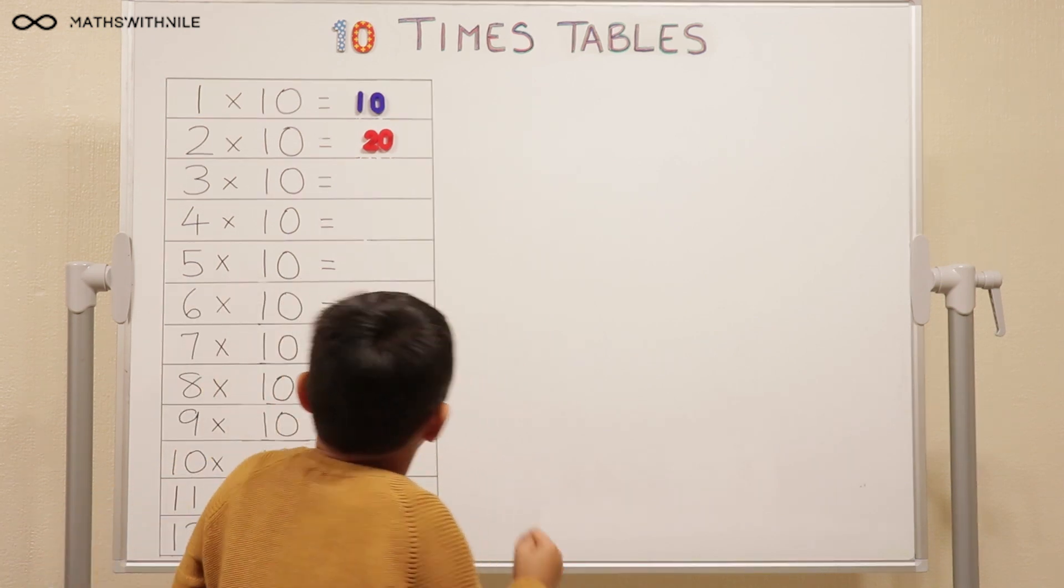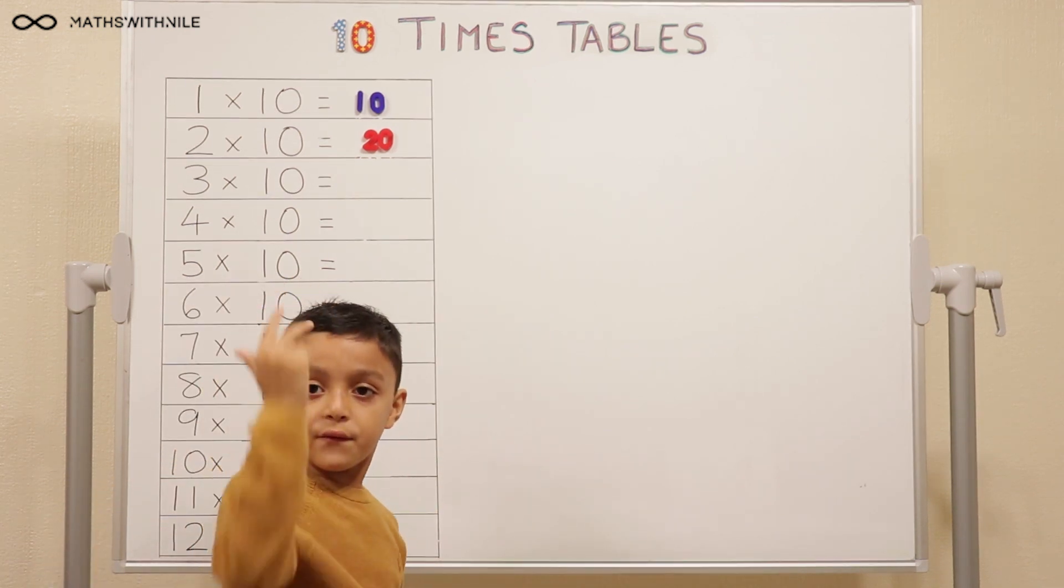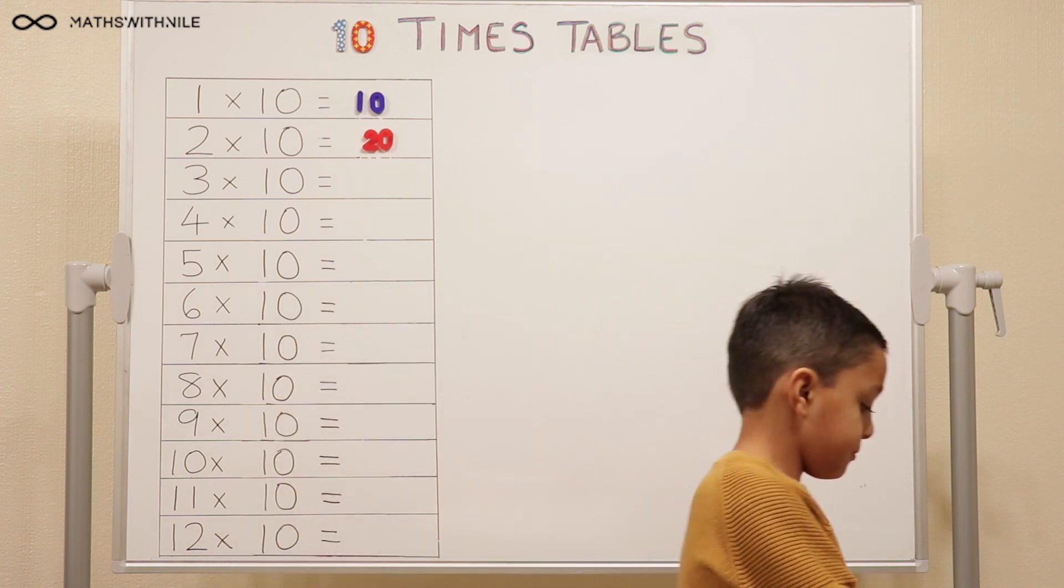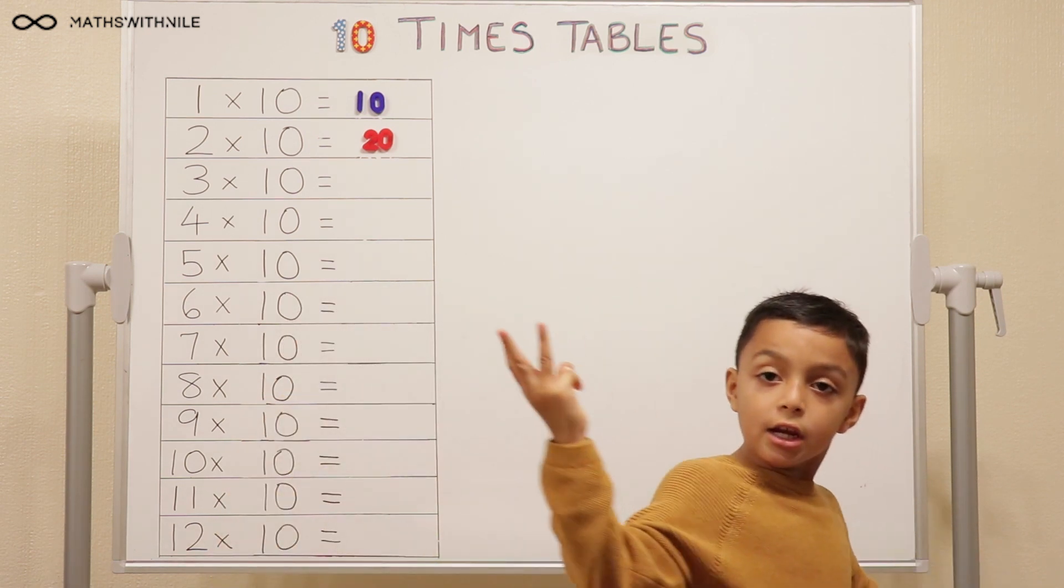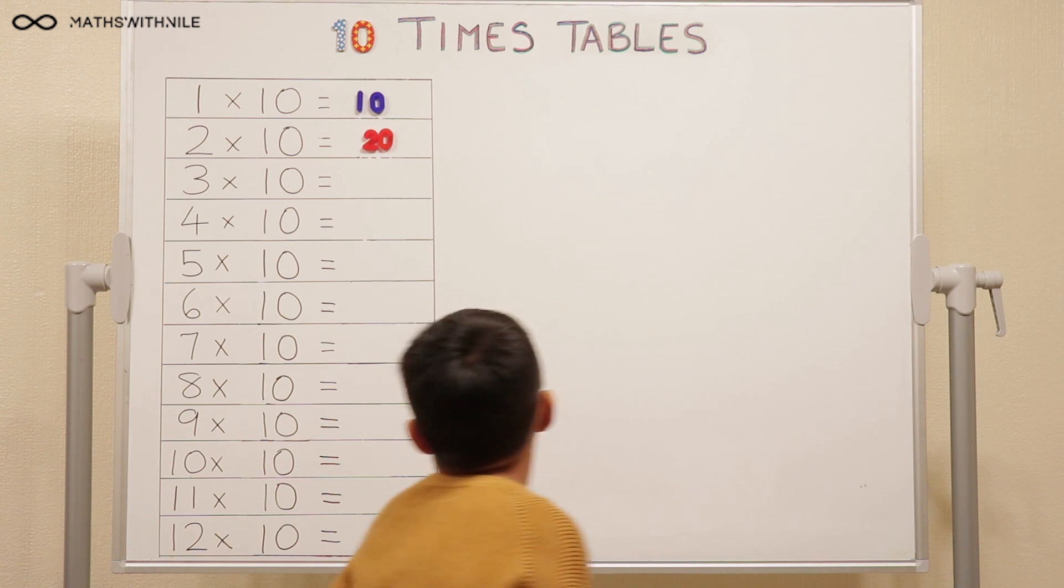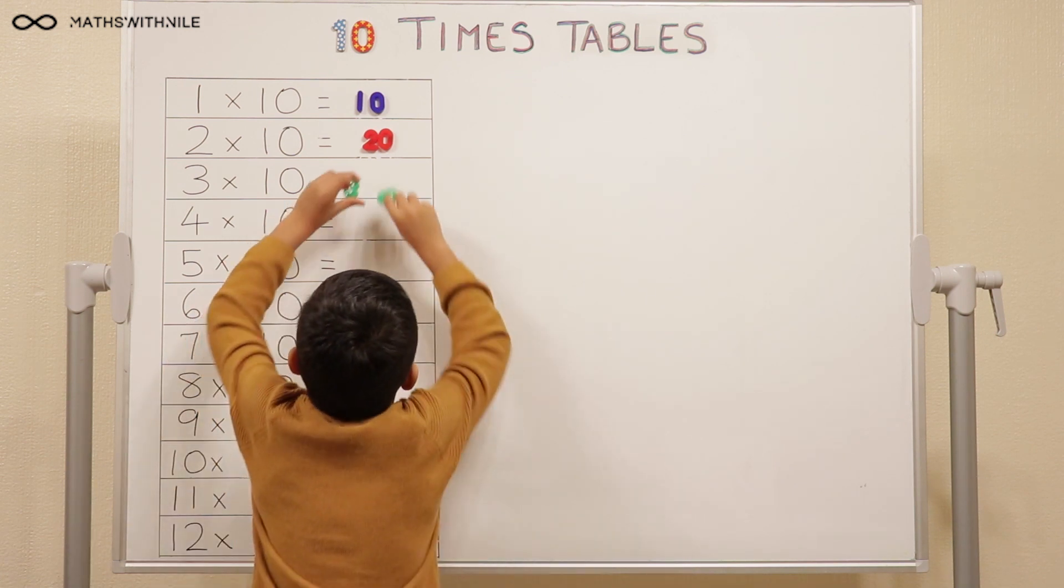3 times 10, 10, 20, 30. So how many fingers did he use? 3! Very good. So you're counting up in 10s, so 3 times 10.